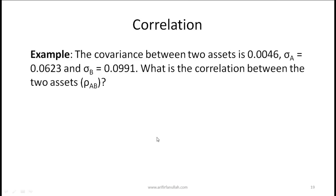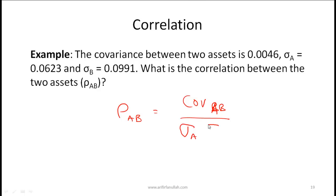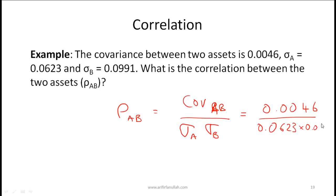For example: if the covariance between two assets is 0.0046, the standard deviation of A is 0.0623, and the standard deviation of B is 0.0991, then the correlation equals 0.0046 divided by (0.0623 × 0.0991). The result will be a number between 0 and 1, giving the correlation between A and B.